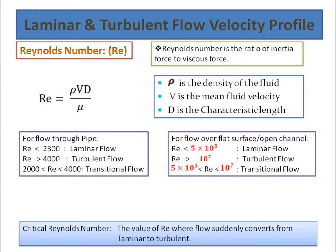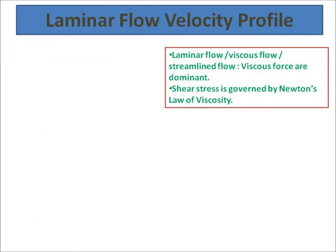Here one new term called critical Reynolds number. It is the value of Reynolds number where the flow suddenly converts from laminar to turbulent. So for internal flow, the critical Reynolds number is 2300.